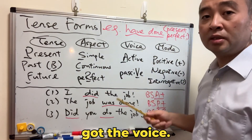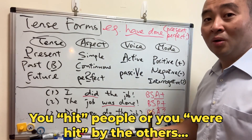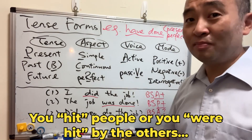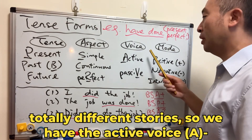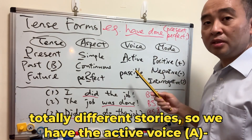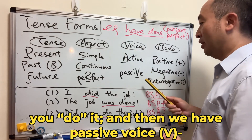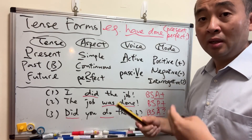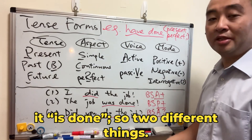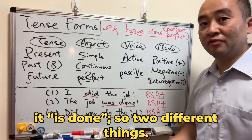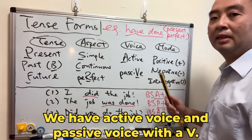We still have got the voice. You hit people, or you were hit by the others — totally different story. So we have the active voice — you do it — and then we have passive voice — it's done. Two different things: active voice and passive voice, with a V.